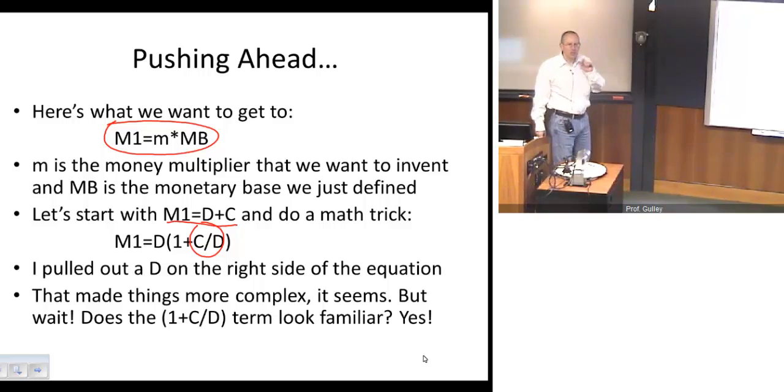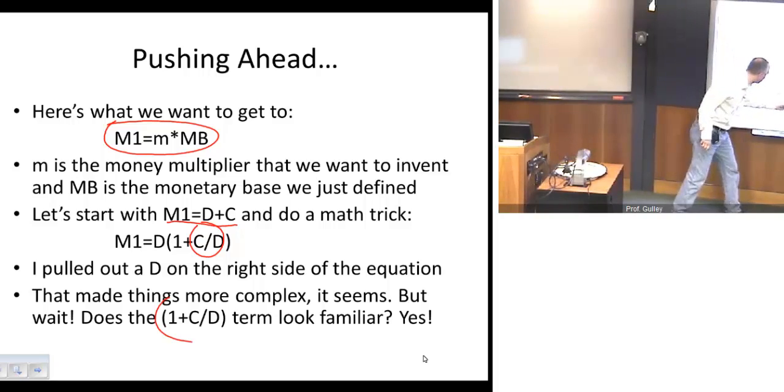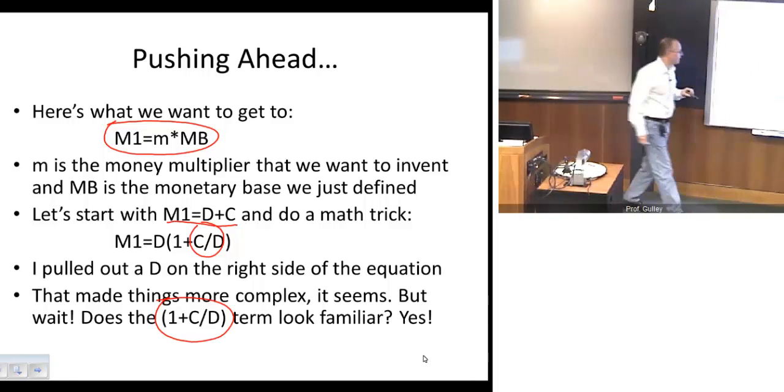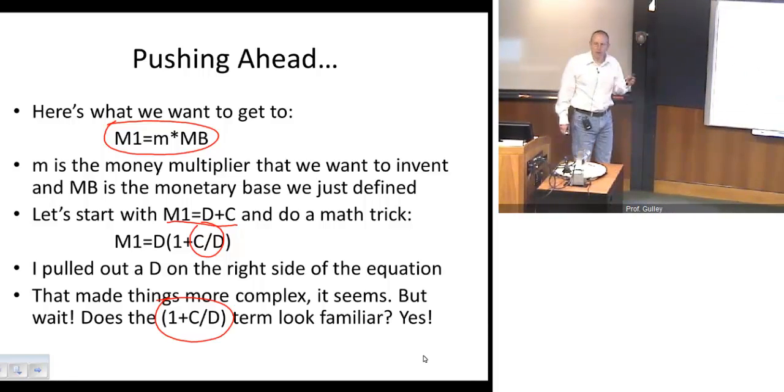And it's done something important for us, because notice that this term right here is just the numerator of that money multiplier that we want to invent. And so we've already somehow, with a very simple trick here, been able to get the numerator of our money multiplier.